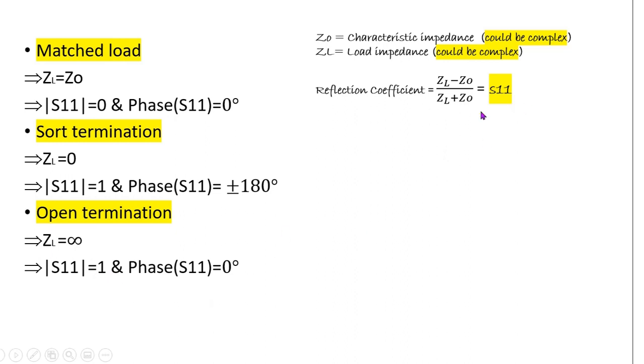So if you put ZL here infinity and if you do little manipulation here, then you can see our S11 will turn out to be one. Magnitude will be one and phase will be zero degree. And I'll promise you in next video I'll verify these two things and also I'll show you one case of complex termination in my next video. Thank you and bye bye.